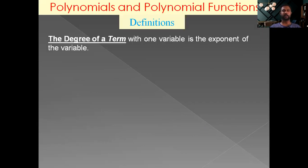Now let us see some basic definitions related to polynomials. The degree of a term with one variable is the power or exponent of the given variable. For 5x square, the degree is 2. For 2x to the power 4, the degree is 4. For 9 minus 9m, m is the variable written as m to the power 1, so the degree is 1.